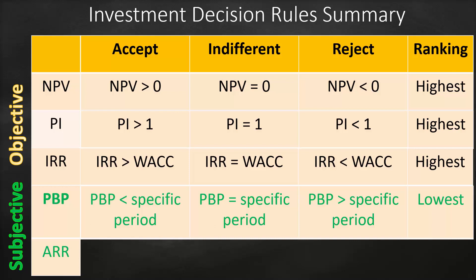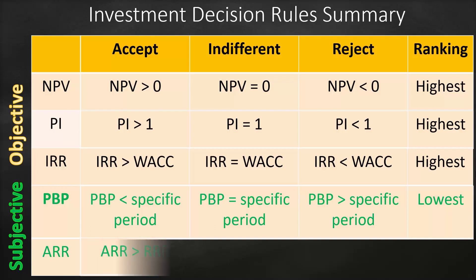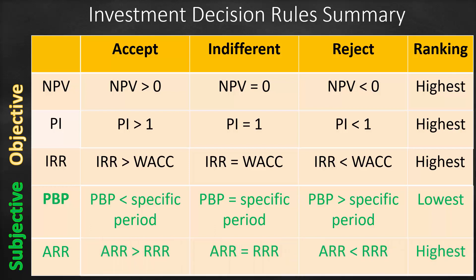If payback period is lower than the specific period chosen, we accept. If equal, we are indifferent. If payback period is bigger than that specific period, we reject. Accounting Rate of Return works the same way.